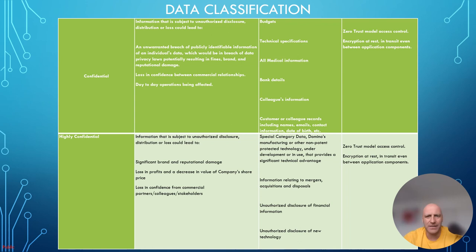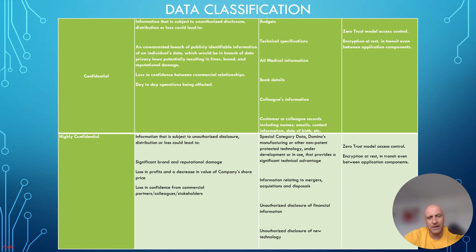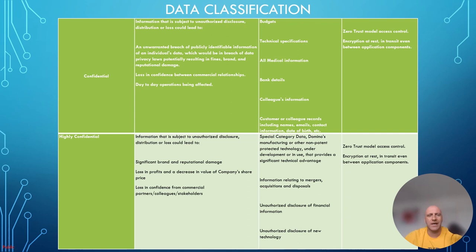For confidential data we require a zero-trust access model as well as encryption at rest and in transit, even between application components. In a Kubernetes or microservices architecture, we can leverage AppArmor profiles and create policies defining which containers are allowed to communicate with each other. This way, should one container become breached, it cannot talk to every other container — especially those holding sensitive information.